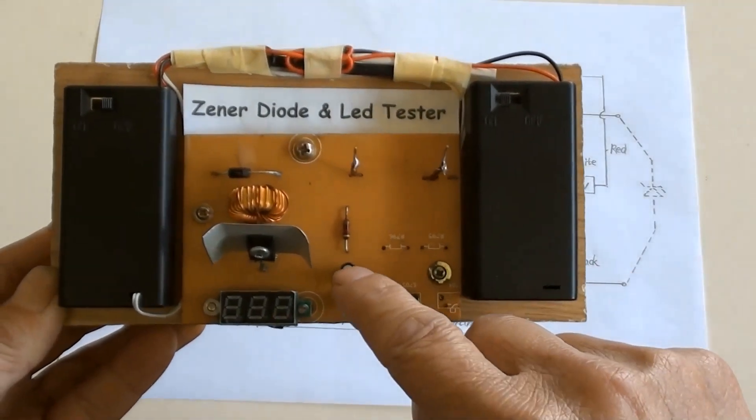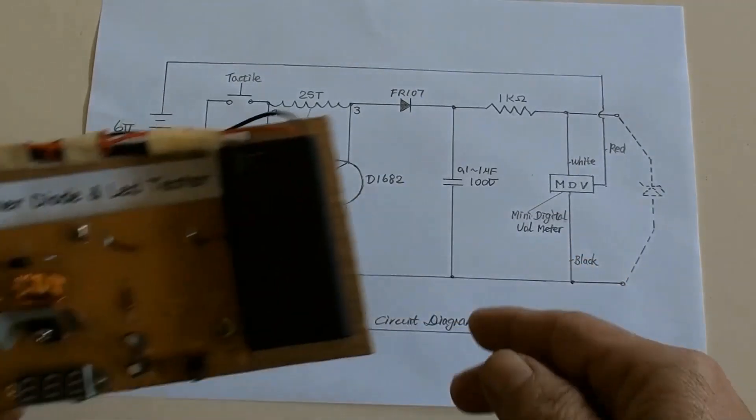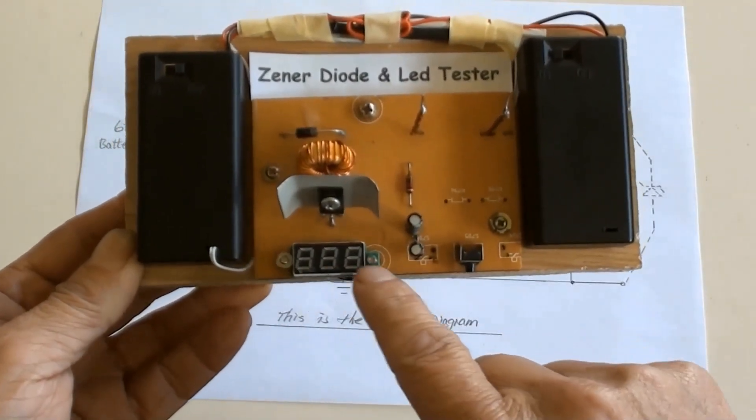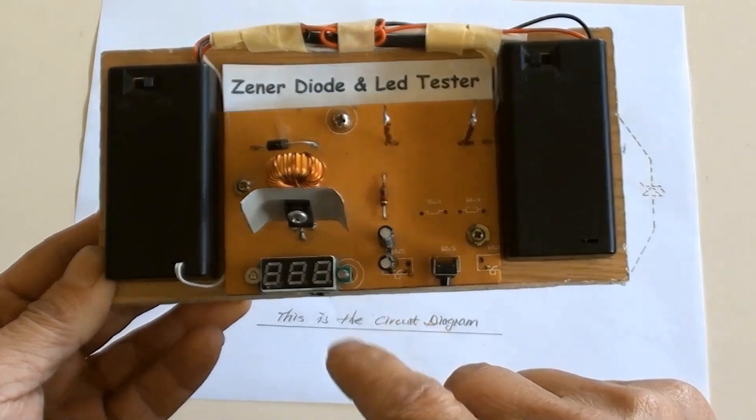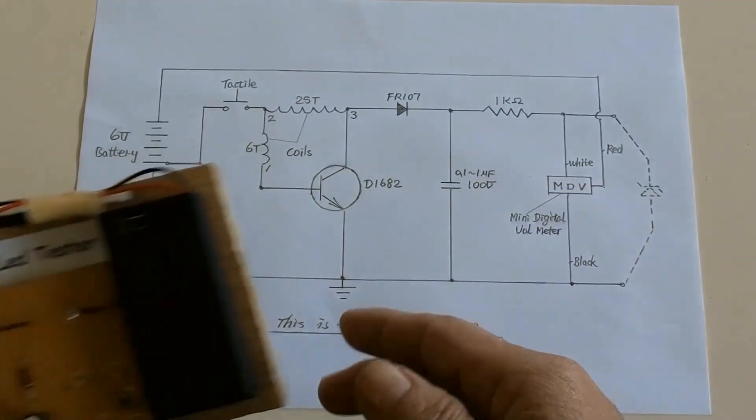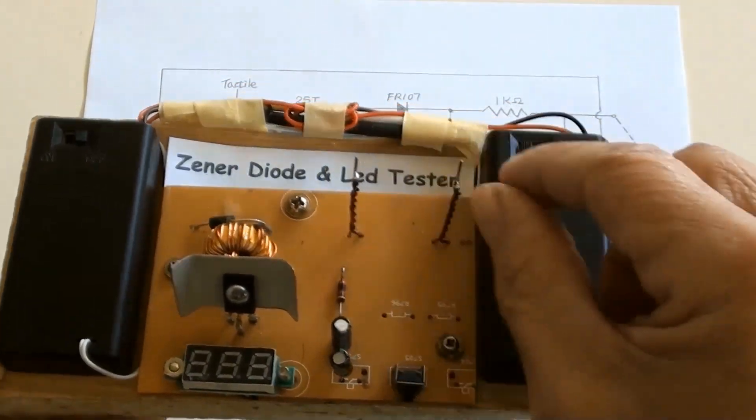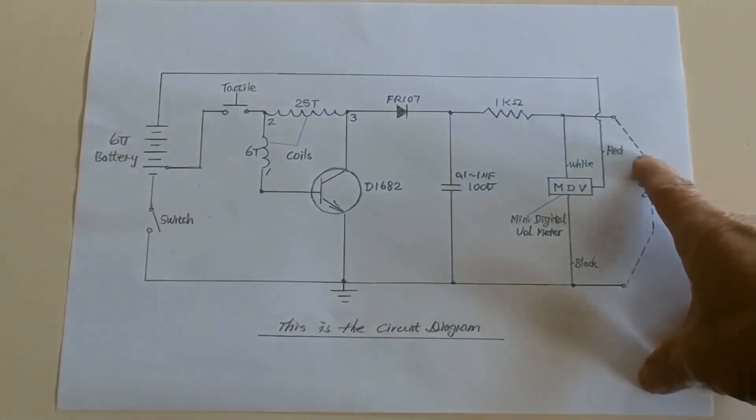A 0.2 microfarad capacitor is there in the diagram. A DC mini digital voltage meter is shown here. Two of those are tester stands, the place where Zener diode or LED leave there to be tested.